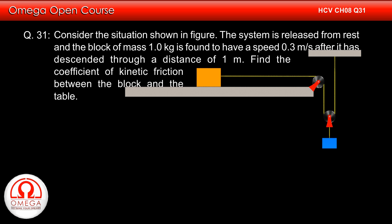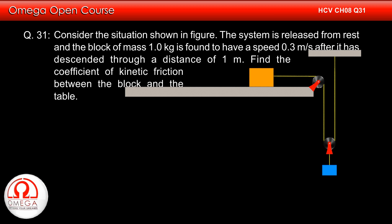Consider the situation shown. The system is released from rest and the block of mass 1 kg is found to have a speed of 0.3 meter per second after it has descended through a distance of 1 meter. Find the coefficient of kinetic friction between the block and the table.